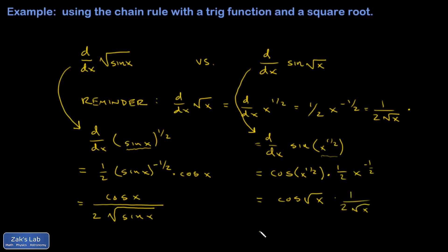It's probably best to write it all as one big fraction: the cosine of the square root of x divided by 2 root x. And we're done.